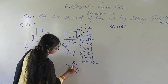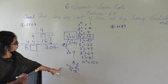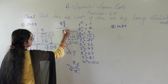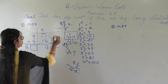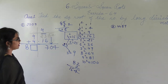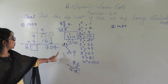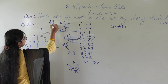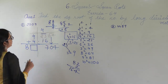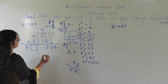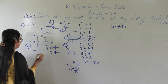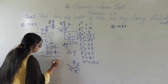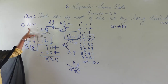Testing: 82×2=164, which is very less. Try 88×8: 8×8=64, 8×8=64, adding gives 704. So multiplying 88 by 8 gives exactly 704. Subtracting 704 from 704 gives remainder 0. Therefore, the square root of 2304 is 48.